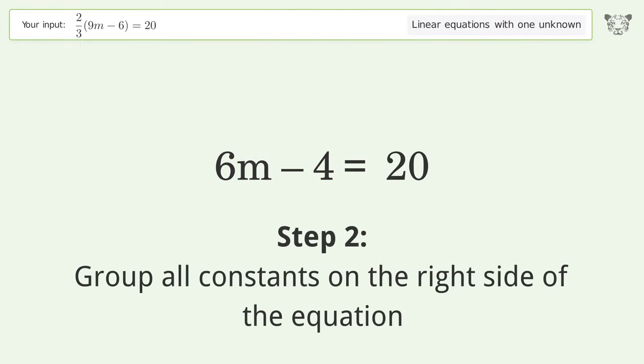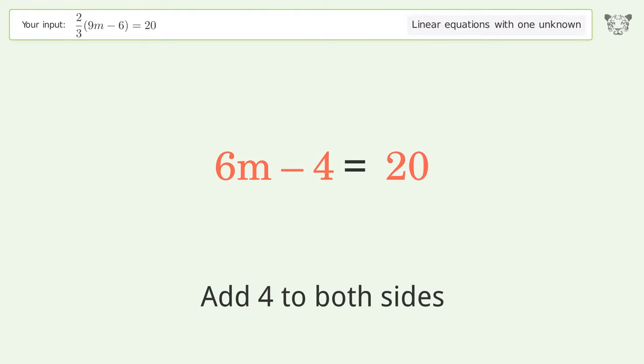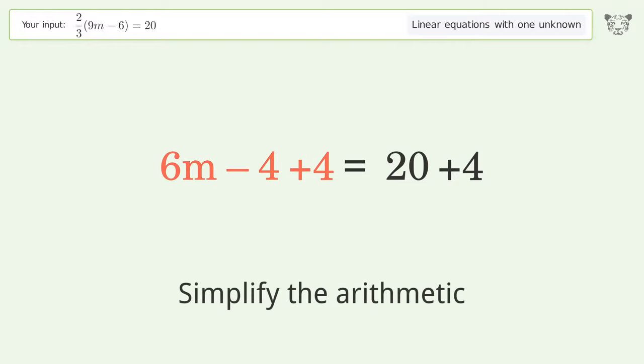Group all constants on the right side of the equation. Add 4 to both sides. Simplify the arithmetic.